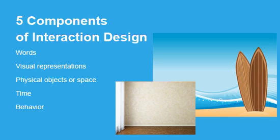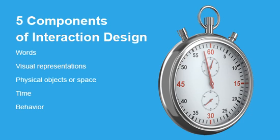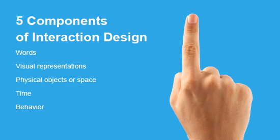The third dimension is physical objects or space — this is the space in which users interact within the interface, so it could be like a fake-looking beach scene or something very abstract. The fourth is time, and examples of time include content that's animated or sound that comes and goes — it's really how people experience the interface, from lack of sound and motion to lots of little things going on to grab the user's attention. And the last dimension is behavior — the user's interactions in reaction to the interface and how they respond to it.